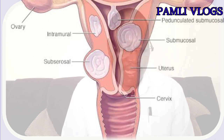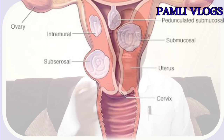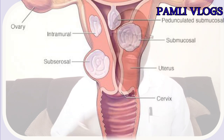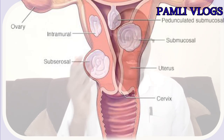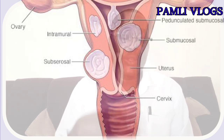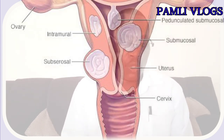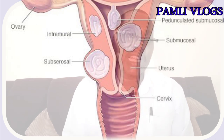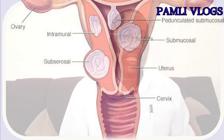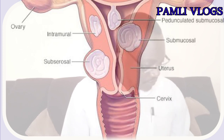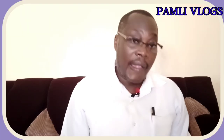Lastly, we have cervical fibroids, located at the wall of the cervix. In terms of growth, uterine fibroids can result in hemorrhage, calcification, and even cystic changes.